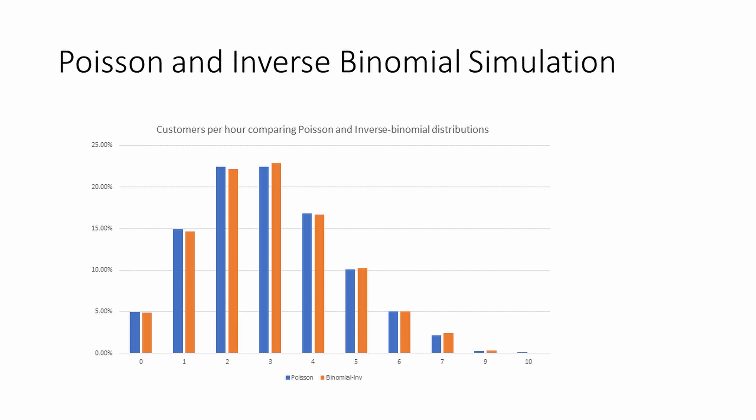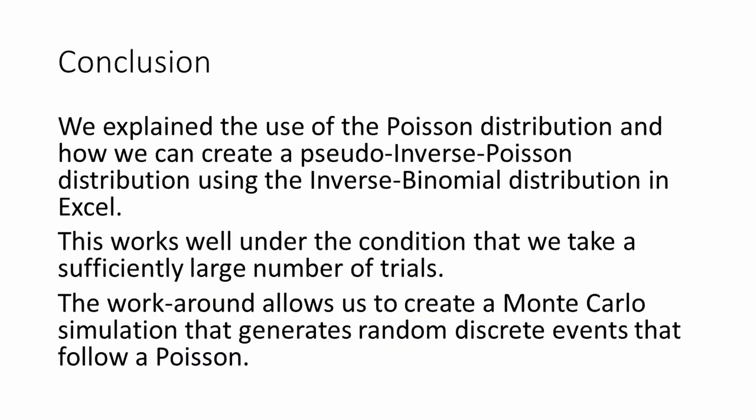In this video we explained the use of the Poisson distribution and how we can create a pseudo-inverse Poisson distribution using the inverse binomial distribution in Excel. This works well under the condition that we take a sufficiently large number of trials. This workaround allows us to create a Monte Carlo simulation that generates random discrete events following a Poisson distribution. This is helpful for risk managers who work with Excel and want to model event occurrences. The spreadsheet is available in the link below. Good luck!